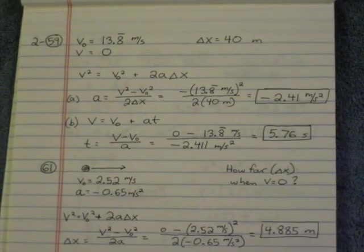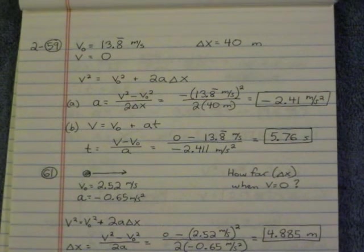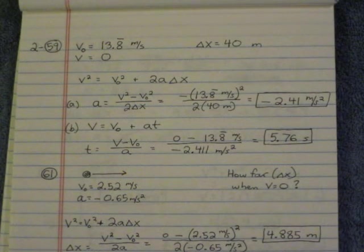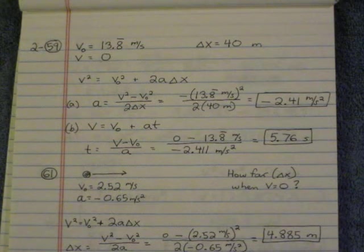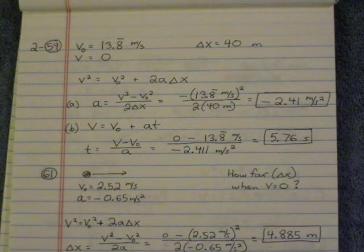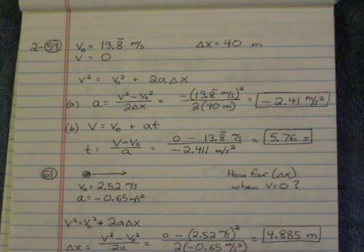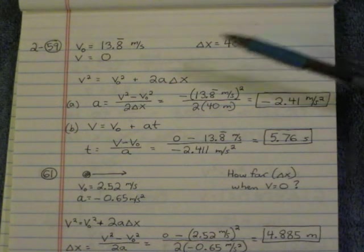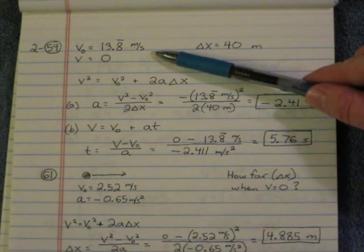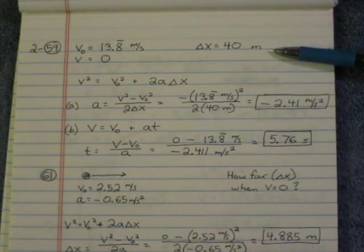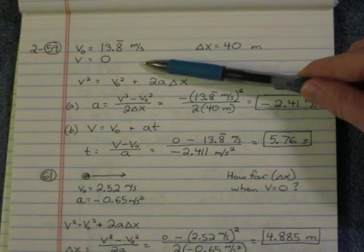Number 59. Driving at 50 kilometers per hour, traffic light 40 meters away turns yellow, constant acceleration required to stop, and what is the stopping time? Okay, we need to convert to meters per second, so I've done the conversion already right here. 13.8 repeating meters per second, displacement is 40 meters, our final velocity is 0.